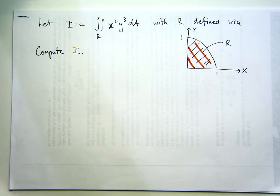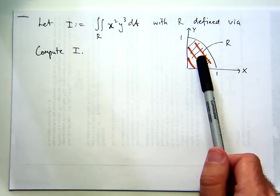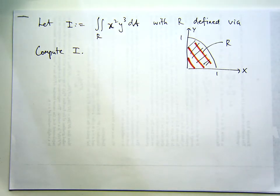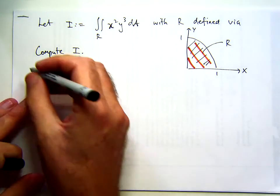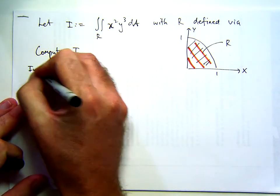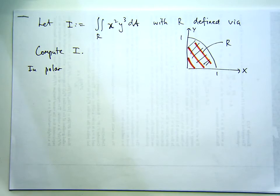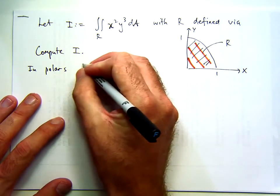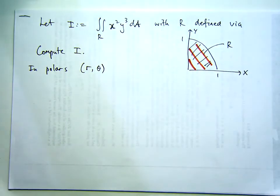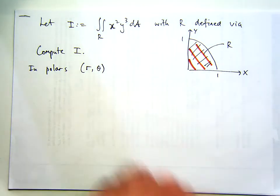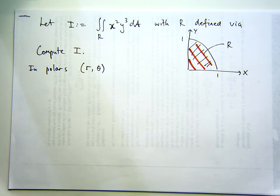So what we'd like to do is describe this region in terms of polar coordinates. Remember, for polar coordinates we have two variables: we have a length and we have an angle. The length r is the distance from any point to the origin, and theta is the angle that the point makes, or the line segment associated with the point makes, with the positive x-axis.